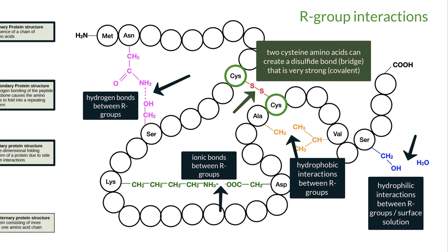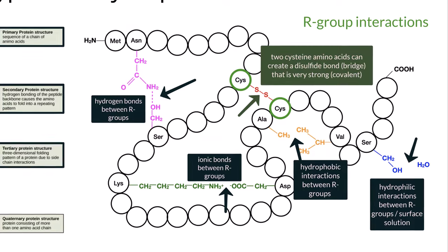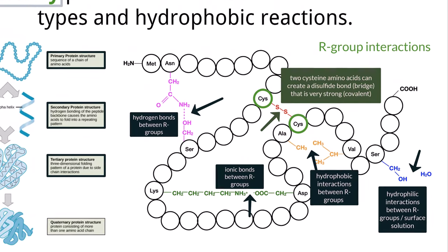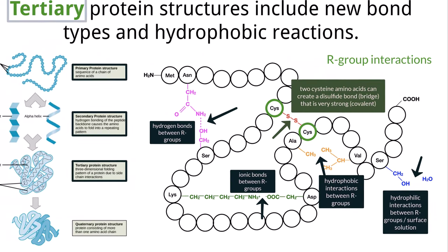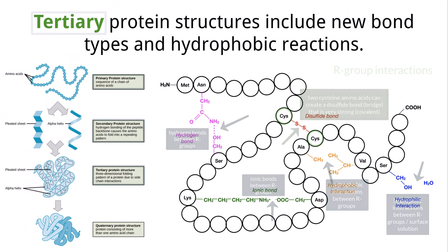It is called a disulfide bond because the R groups of cysteine contain sulfur. To create the bond, two sulfur atoms from each amino acid end up bound together, which is where the 'di' and the 'sulfide' within the name originate from. Make sure you know about all of these for the IB exam in relation to the tertiary structure of a protein.